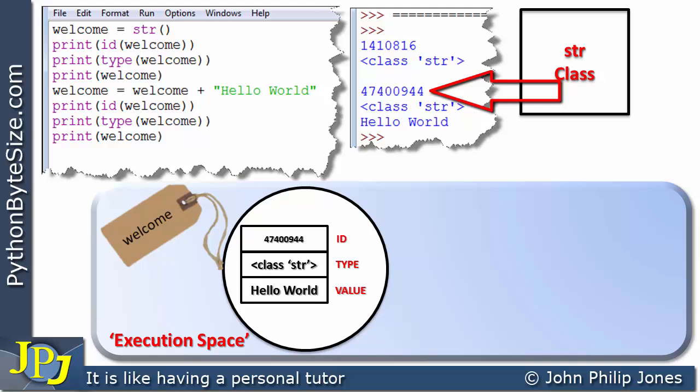And of course then we print the type of welcome. We can see that is here, so it gets printed on the screen here. And now we print welcome. We locate the label, this is the value, and you can see that that actually gets printed to the screen.